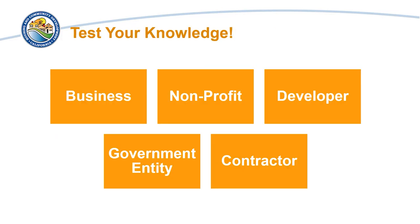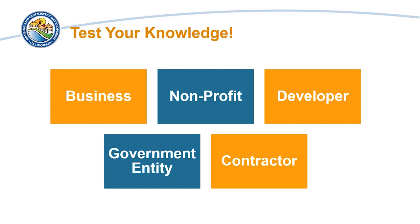Let's test your knowledge. Which of the following entity types can be subrecipients? Only nonprofits and government entities can be subrecipients. Businesses and developers cannot be subrecipients because they are recipients or beneficiaries of CDBG-CV funding. Contractors must be procured.